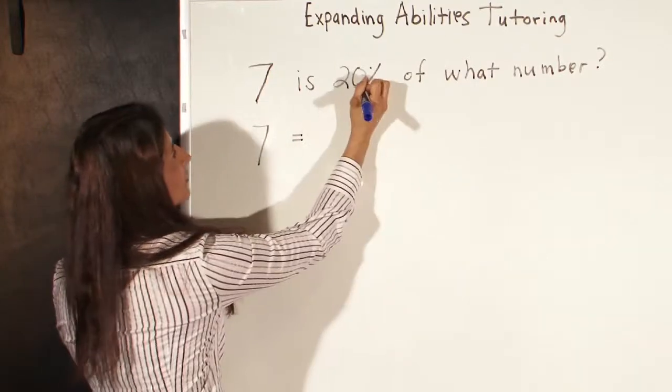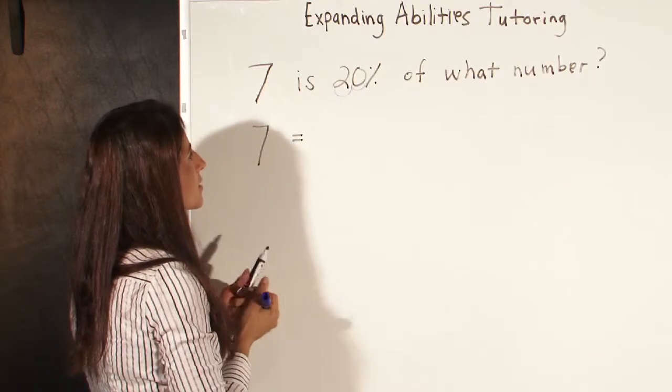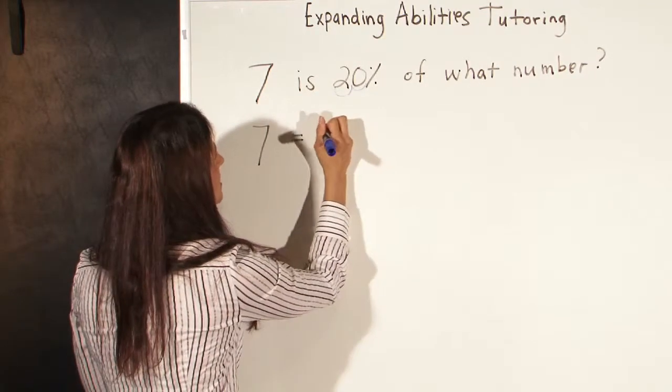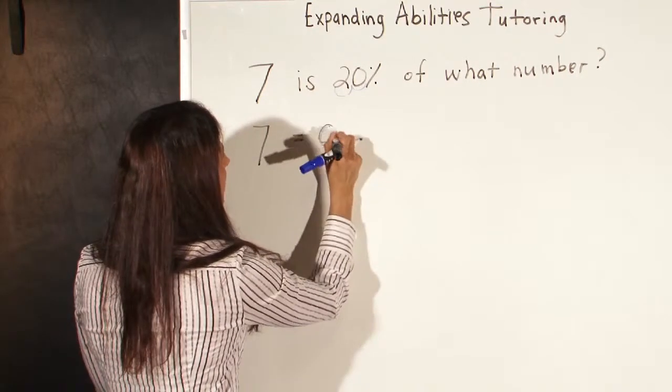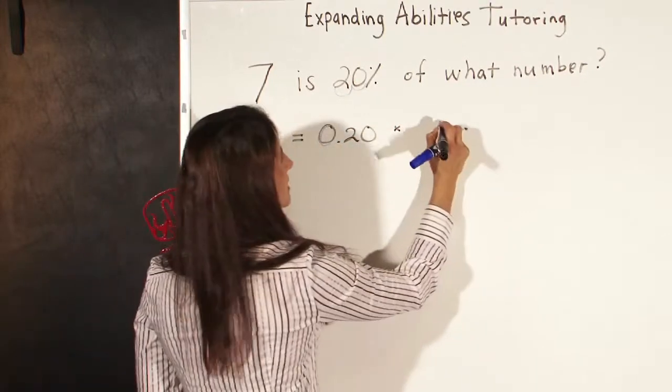And as we talked about before, we're going to change our percentages into a decimal by moving our decimal two places to the left. And so that becomes .20. Of means multiply, and what number is x.